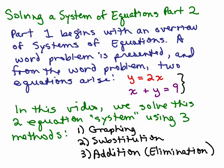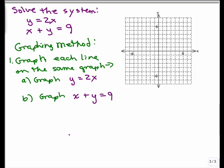The graphing method, the substitution method, and the addition method. Any of these methods can be used to solve a system. Okay, so solve the system y equals 2x, x plus y equals 9. This is how the graphing method works: you graph each line on the same graph, so you're going to graph y equals 2x and then you're going to graph x plus y equals 9.